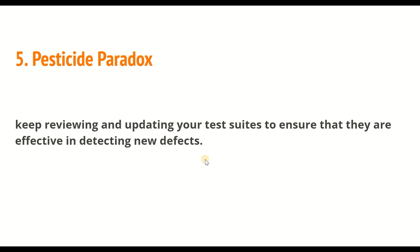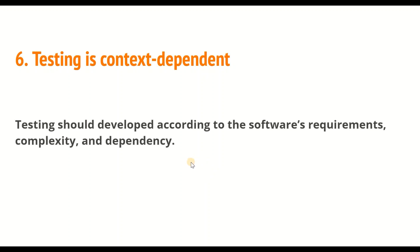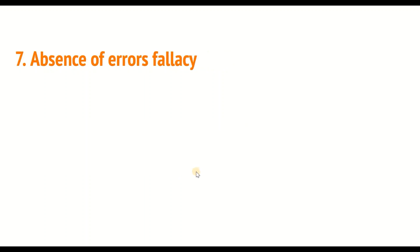The sixth principle is: testing is context dependent. Testing should be developed according to the software requirements, complexity, and dependencies. The testing strategy should be tailored to meet the specific needs of the software system, because every software has its unique characteristics and behavior. For example, an e-commerce website is very different from an inventory management system, so your testing scenarios and process should be totally different based on your requirements and complexity.